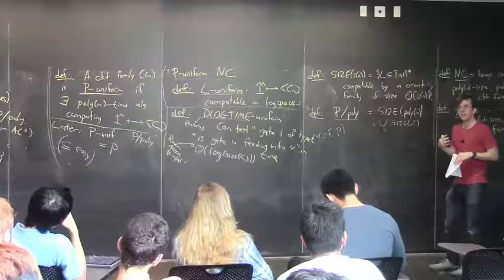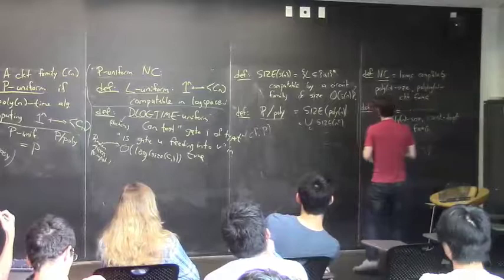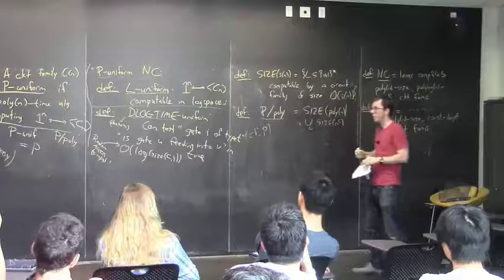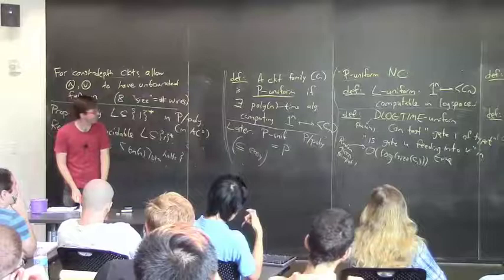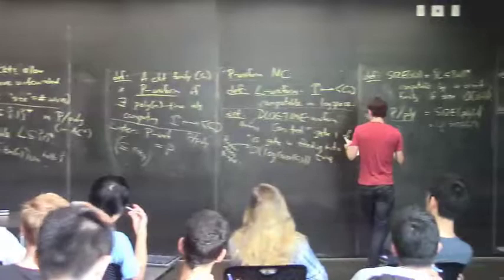DLOGTIME-uniformity is relevant when dealing with exponential-size circuits. For example, the polynomial time hierarchy is kind of like a uniform version of AC0 but for exponential-size circuits, and that's literally true if you impose this uniformity condition. These are technicalities we may eventually encounter, but don't get too stressed about them.